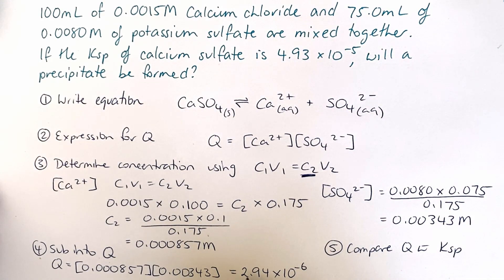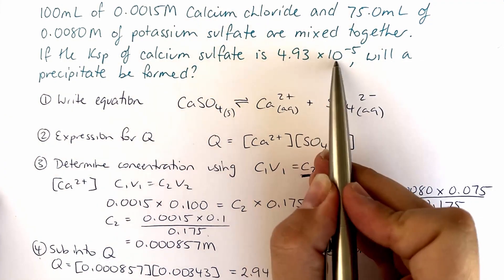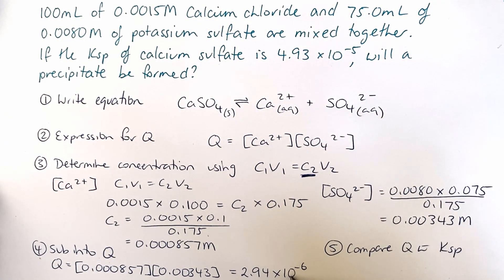Now our very last step is to compare Q with our Ksp. So here is our Q, here is our Ksp. So our value for Q is less than our Ksp value and that means that no precipitate will form.